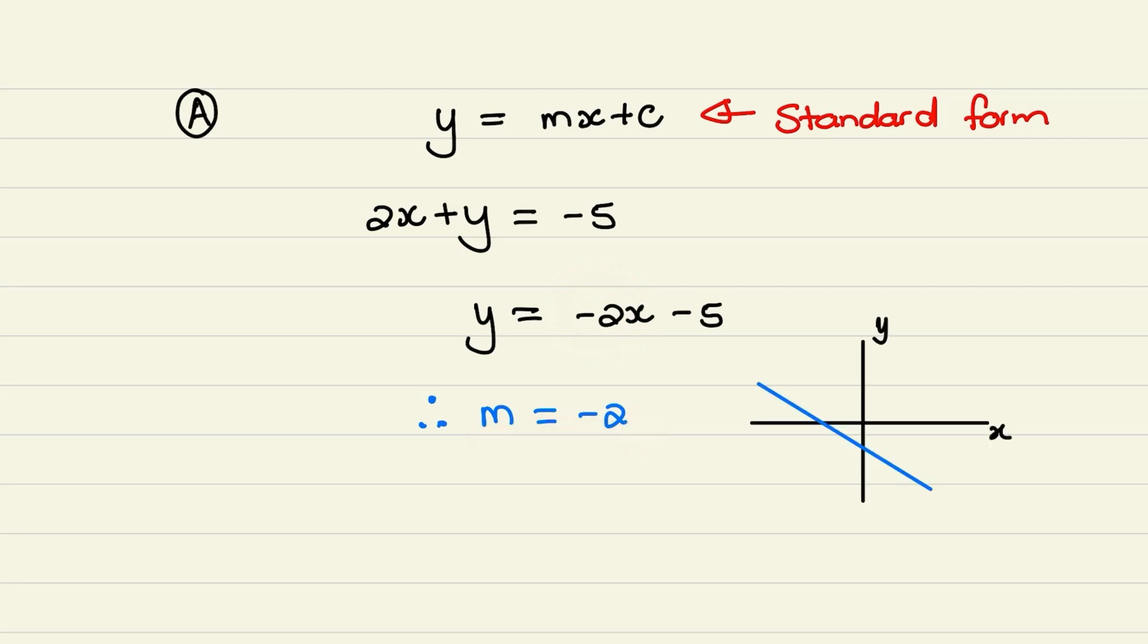And in a previous video, we discussed what a gradient of negative 2 means. It means that the line is decreasing from left to right. So when the gradient is smaller than 0, the line would be decreasing.